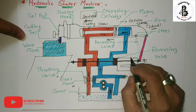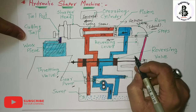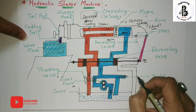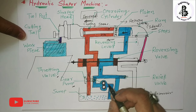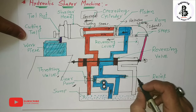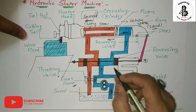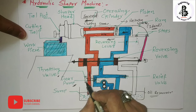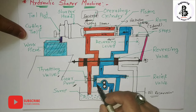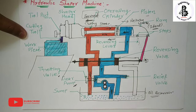Some advantages of hydraulic shaper machines: First, the cutting and return speeds are practically constant throughout the strokes, maintained by the constant pressure of the gear pump. Second, an infinite number of cutting speeds may be obtained by operating the throttling valve — changing the position of the throttling valve allows different forward stroke and return stroke speeds.